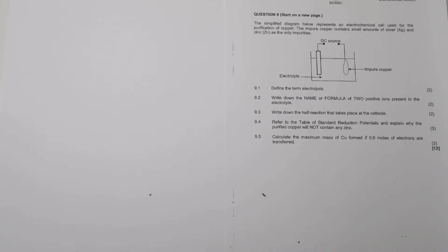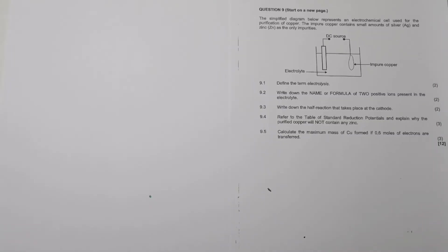They say first of all define the term electrolysis. Well, we say it is the process of breaking down compounds and forming new ones by using electrical energy. In some instances you can say it's the process in which electrical energy is converted to chemical energy. As long as you illustrate that electrical energy is used to produce chemical energy.